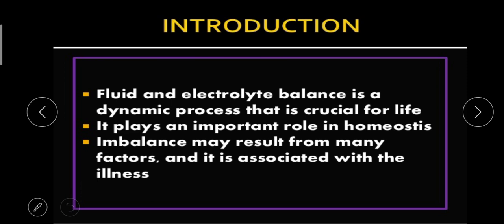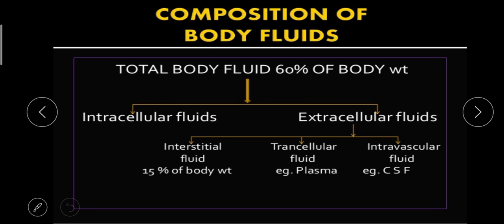Next, composition of body fluids. In our body, 60% of body weight is fluid. There are two types: intracellular fluid and extracellular fluids. Intracellular fluid is inside the cell, extracellular fluid is outside the cell. Extracellular fluids are divided into interstitial, transcellular, and intravascular. Interstitial fluid surrounds the cell, transcellular example is plasma, and intravascular is CSF, cerebrospinal fluid.